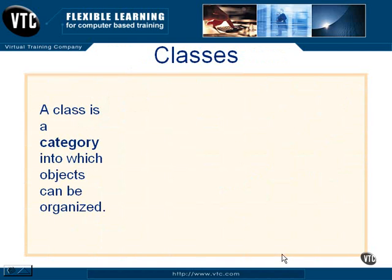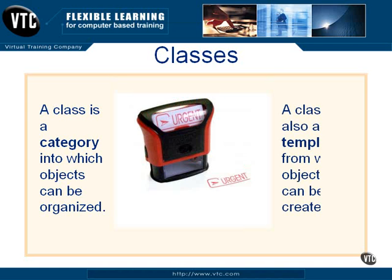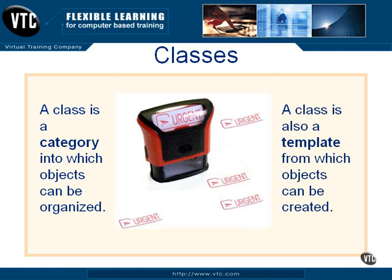A class is a category into which objects can be organized. Individual instances of particular fish can be organized into the goldfish category. In addition, a class is also a template from which objects can be created. You can think of a class as a cookie cutter or a rubber stamp — once you've defined a class, you can use it to create brand new objects.